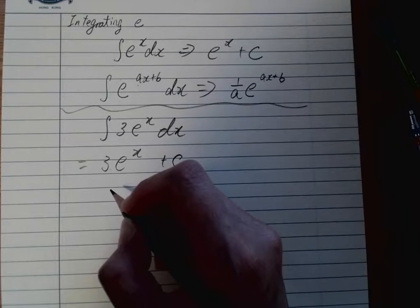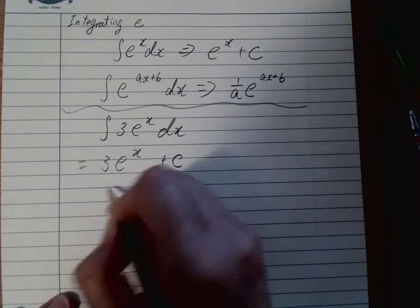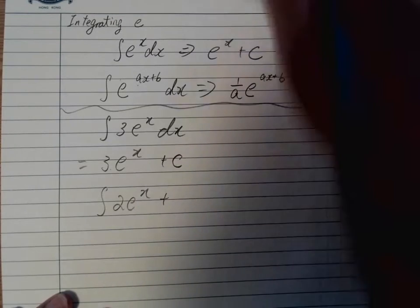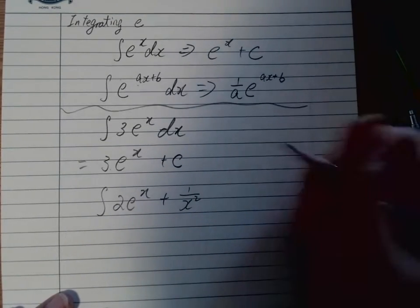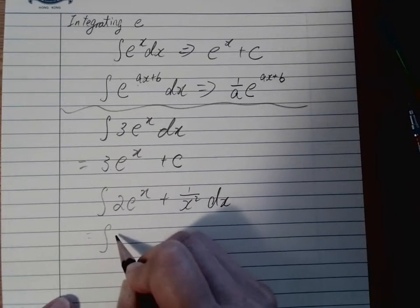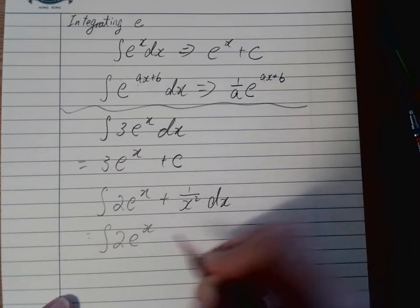But how about that? We put other numbers together. Let's see. 2e^x plus 1 over x squared, dx. Since we do not like the denominator again, we will throw it to the front. We will make it an index.